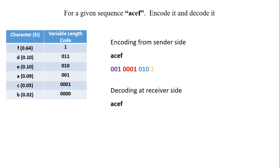For encoding and decoding, a table mapping each character to its variable length code is maintained at both sender and receiver. To encode the sequence ACF: A is '001', C is '0001', F is '1'. So the transmitted bitstream is 001 0001 1. At the decoder, starting with 0 — three zeros narrow down to the last two cases, then '001' matches only A.